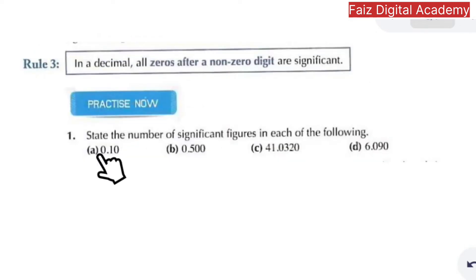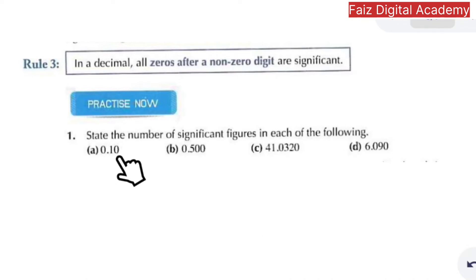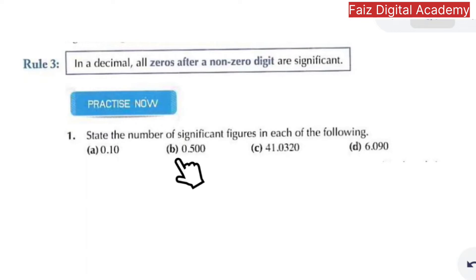The third rule is: in a decimal, all zeros after a non-zero digit are significant. For example, 0.10 — the first zero is not significant, but the second zero is significant because it comes after a non-zero digit. So 0.10 has two significant figures.